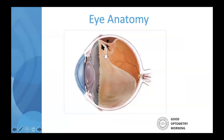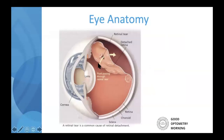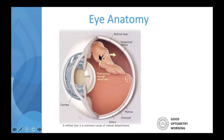What happens is that the vitreous is so tightly adhered to the retina in certain spots that instead of pulling away cleanly, it causes a small tear in the retina. That tear creates an opening, and fluid can start to get underneath the retina and begin separating it — this is what we call a retinal detachment, where the retina pulls away from the back of the eye, and that is very serious. If we notice a tear or a retinal detachment, a retinal specialist will need to see you urgently — usually the same day or next day — and treatment involves either laser to seal the tear or surgery for a detachment.